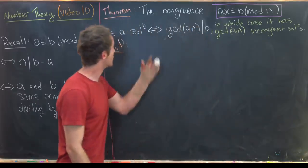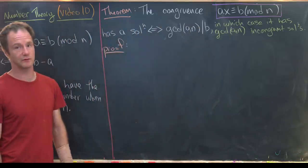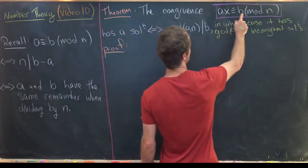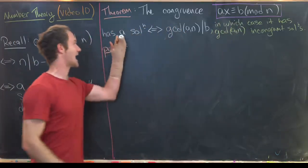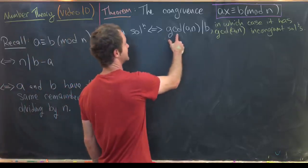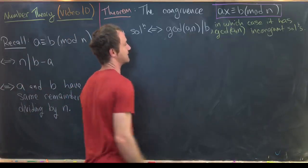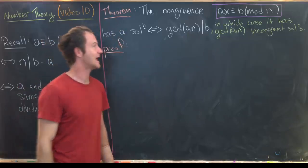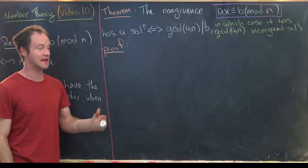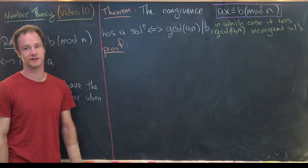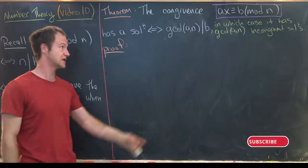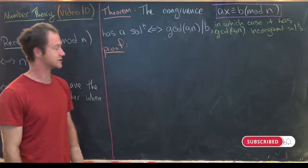The first theorem we want to prove is: the congruence ax ≡ b (mod n) has a solution for x if and only if gcd(a, n) divides b. In that case, it has exactly gcd(a, n) incongruent solutions. So you could potentially have more than one solution if this gcd is not equal to one.